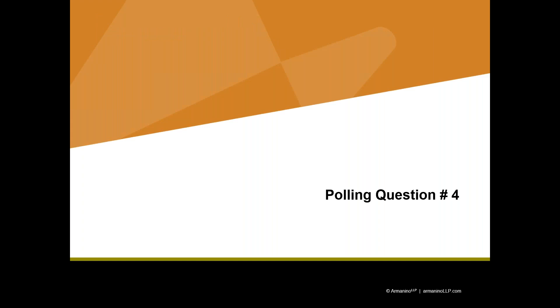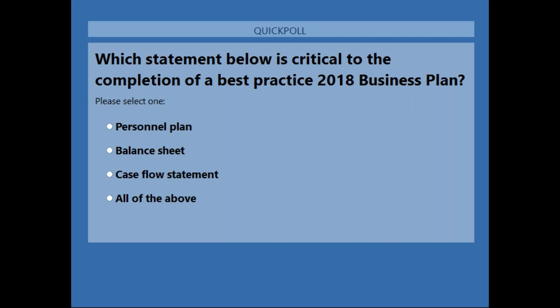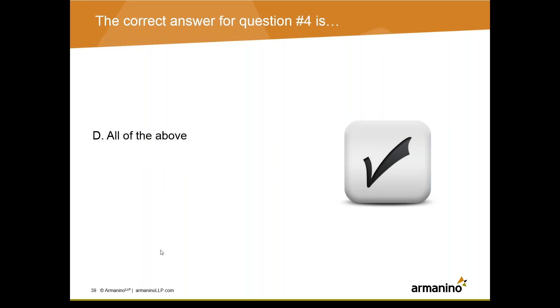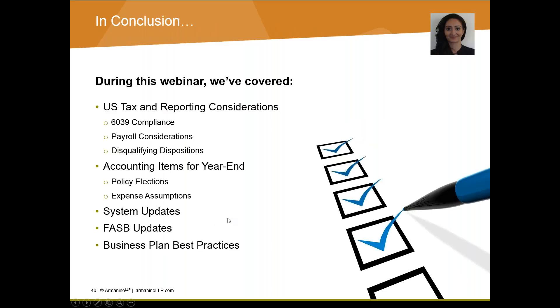We are on our last polling question. You need to answer this one if you missed any previous questions. Which statement below is critical to the completion of a best-practice 2018 business plan — a personnel plan, balance sheet, cash flow statement, or all of the above? The answer is all of the above — that's the lion's share of responses. For those who thought the personnel plan wasn't important: it's really important that you know what your staffing is going to be to make sure you get to that next level.